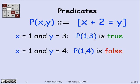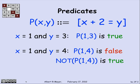If I tell you that x is 1 and y is 4, then since 1 plus 2 is not equal to 4, P of 1 and 4 is false. On the other hand, since P of 1 and 4 is false, that makes not P of 1 and 4 true. That's the easy part.